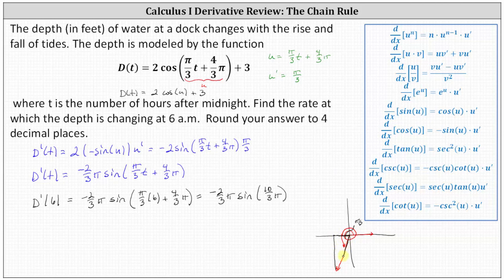Let's sketch the reference triangle. This is a 30-60-90 reference triangle: we label the short leg one, the hypotenuse two, and the longer leg square root of three. But because we're in the third quadrant where x is negative and y is negative, the one is negative and so is the square root of three. Therefore, the sine of ten-thirds pi radians equals the ratio of the opposite side to the hypotenuse, or negative square root three divided by two.